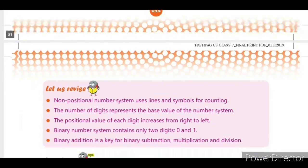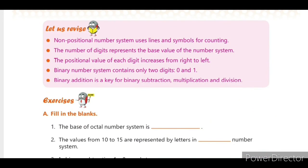Let's revise the whole chapter. Non-positional number systems use lines and symbols for counting. The number of digits represents the base value of the number system. The positional value of each digit increases from right to left. Binary number system contains only two digits: 0 and 1. Binary addition is the key for binary subtraction, multiplication, and division.